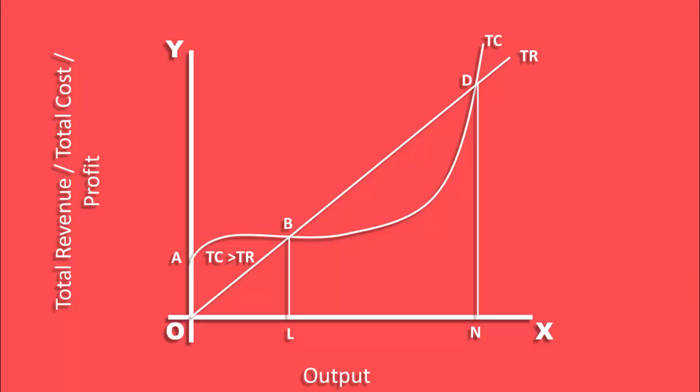Again, the firm will not operate beyond the output N. To the right of this output, total cost is greater than total revenue.